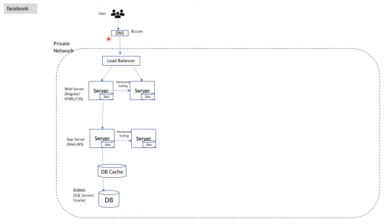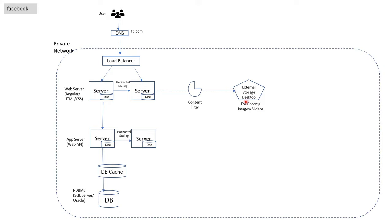There are a lot of images and videos circulated and uploaded on Facebook regularly, and it's not a good idea to keep all these files on the same server. Therefore, we will set up an external storage which will keep all these images and videos. Sometimes these images and videos contain objectionable things like nude photos which you want to filter out before saving them to external storage. For this we will set up a content filter here, which will work in an automated way to identify and remove objectionable content before storing.